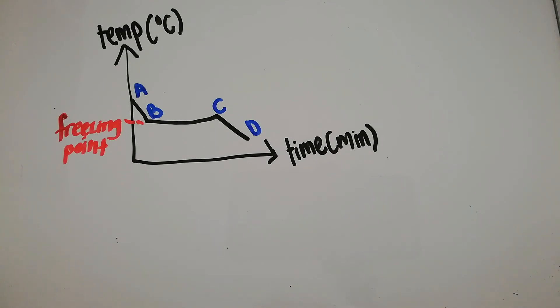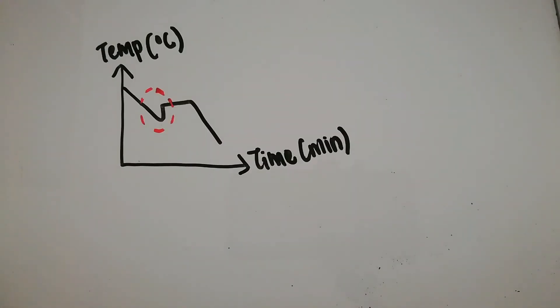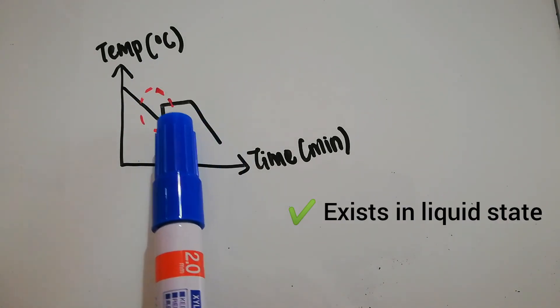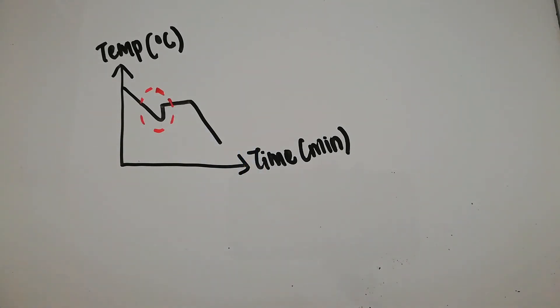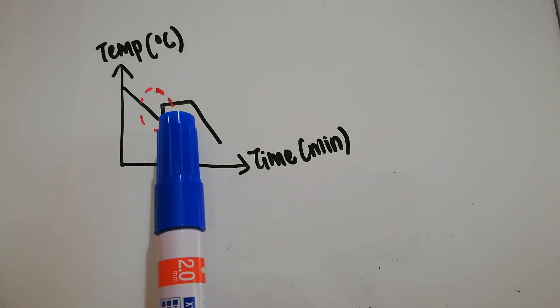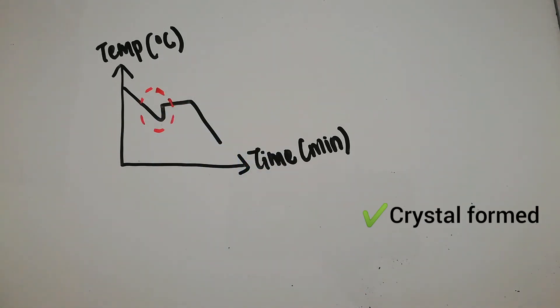This is the curve of super cooling. Super cooling is the cooling of liquid to below its freezing point but keeping it in a liquid state. At this point, it's still liquid, then it goes up again and undergoes the change from liquid to solid here. No solid can form because it lacks solid particles to form crystal. That's what super cooling does.